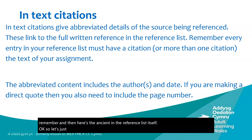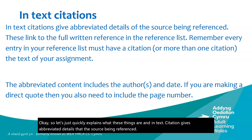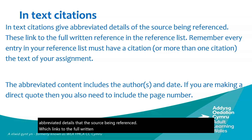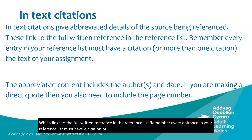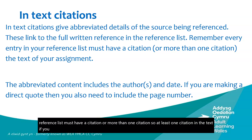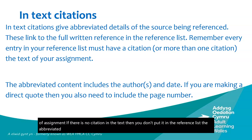An in-text citation gives abbreviated details of the source being referenced, which links to the full written reference in the reference list. Remember, every entry in your reference list must have at least one citation in the text of your assignment. If there is no citation in the text, you don't put it in the reference list. The abbreviated content includes the author or authors and date, and if you're making a direct quote you also need the page number.